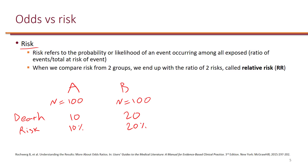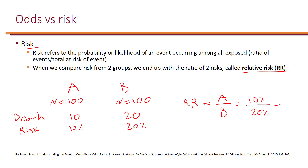We also have the concept of relative risk. The relative risk would be the ratio of the risks. So if you're comparing group A to group B, it would be 10% divided by 20%, which would be 50%.